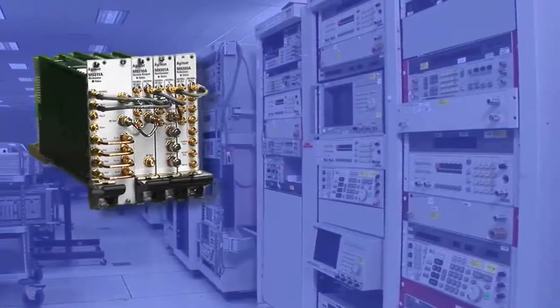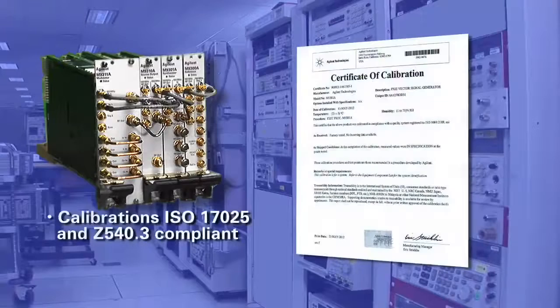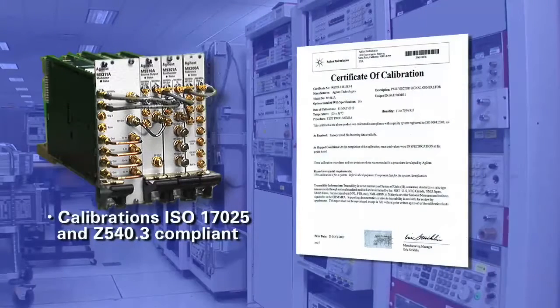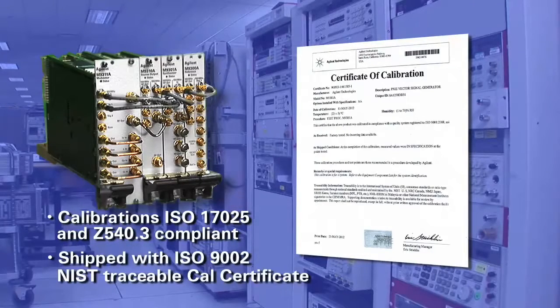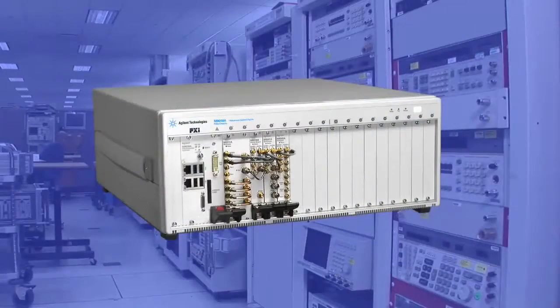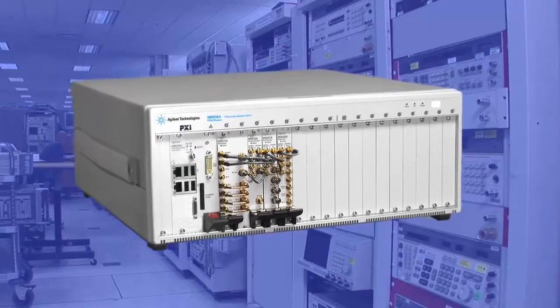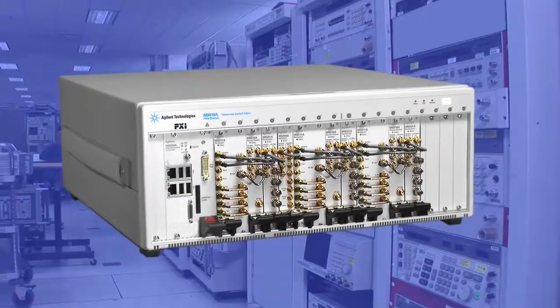M9381A VSG calibration is compliant with ISO 17025 and Z540.3 and the VSGs are shipped with ISO 9002 NIST traceable calibration certificates. The calibration information is also stored in the VSG making it easy to manage multiple module instrument configurations.